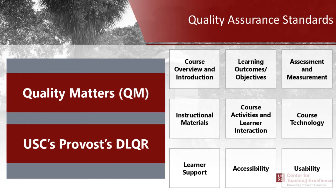There are nine domains of standards — nine big categories — and within those categories there are 49 specific standards. The first category is course overview and introduction, which includes giving students all the information they need to be successful. The second is learning outcomes and objectives, which lets students know what measurable skills they should master by the end of the course — both at a course level and broken down at a module level.